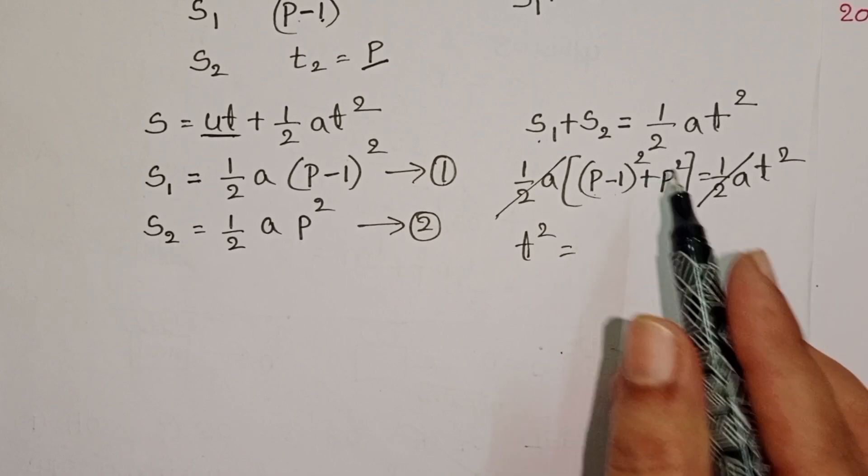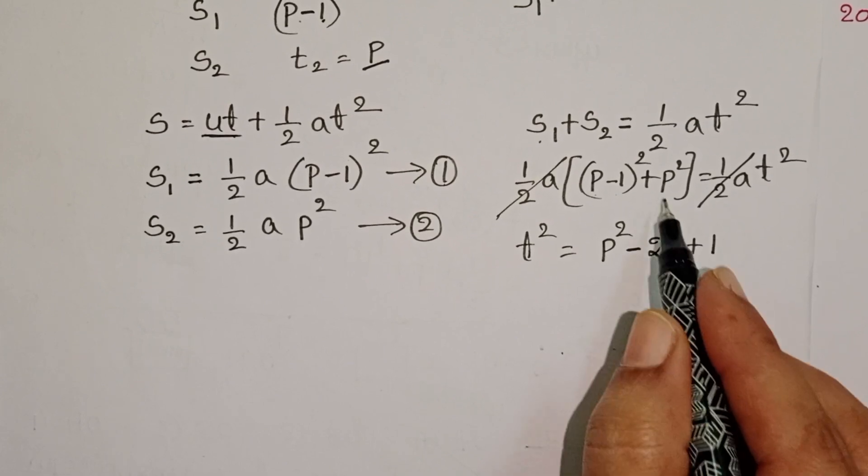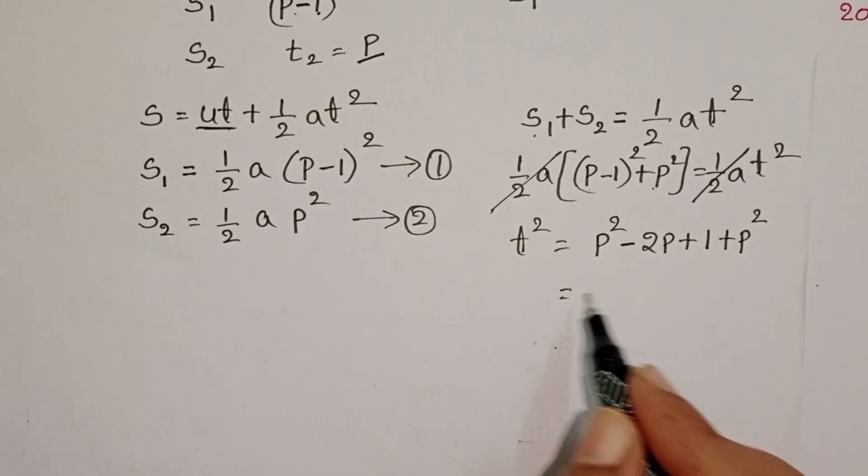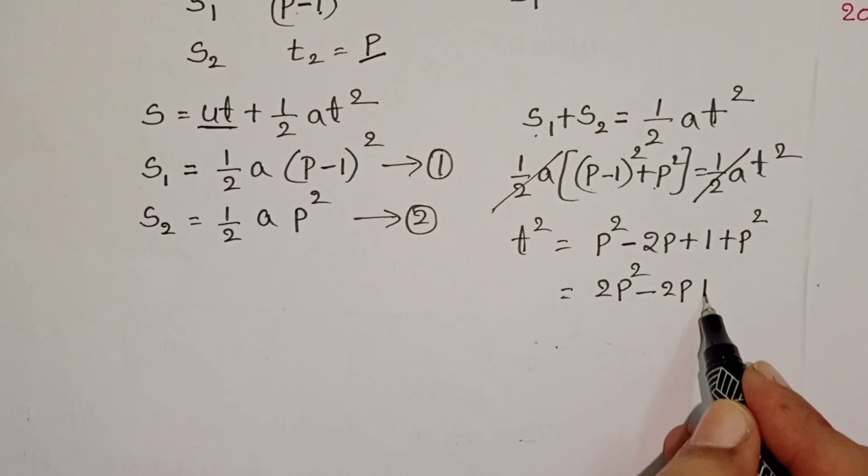A minus P whole square form gives P square minus 2P plus 1. And also here P square is there. P square plus P square: 2P square minus 2P plus 1.